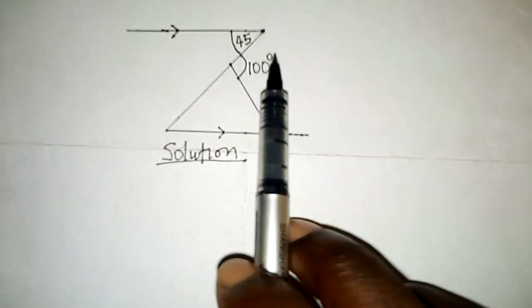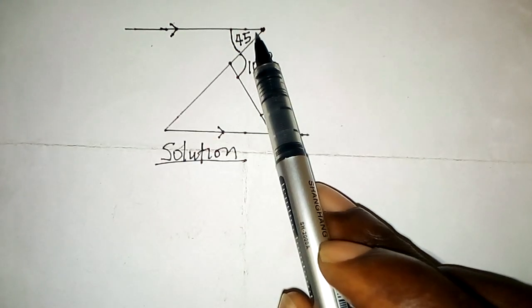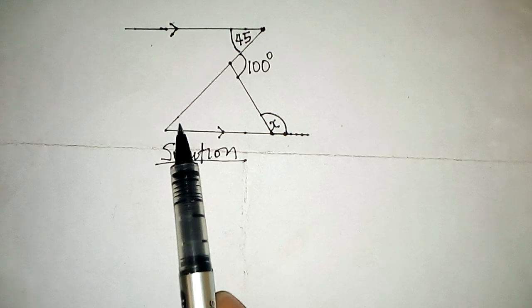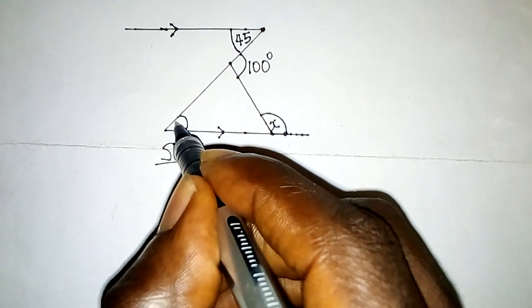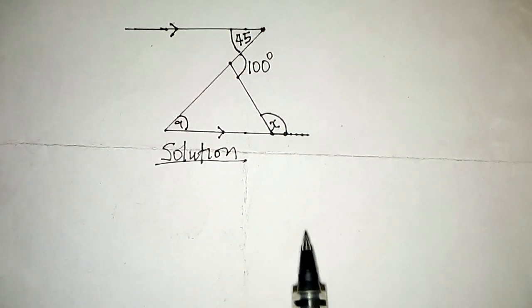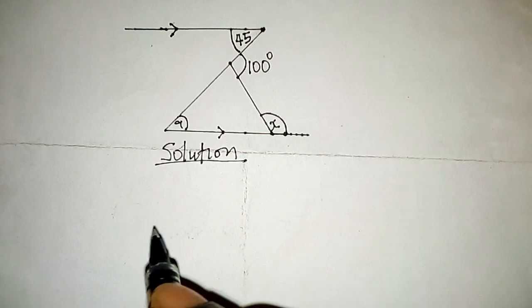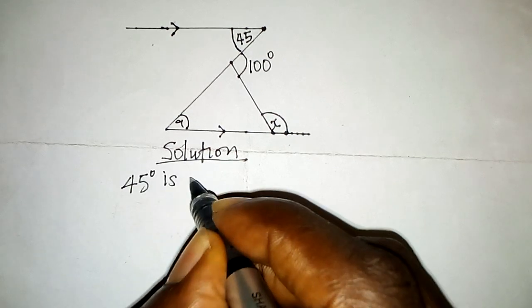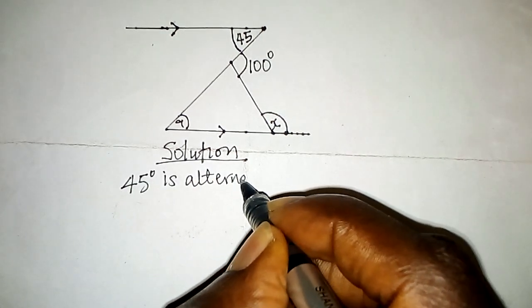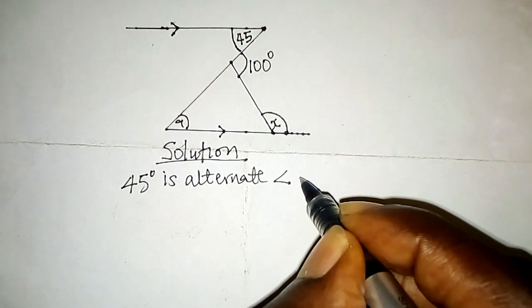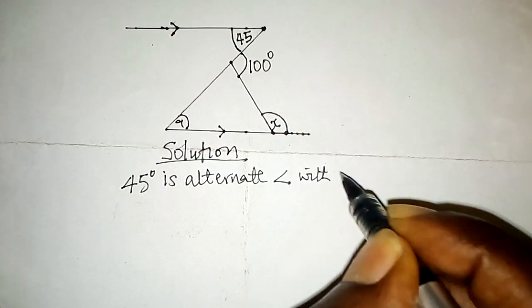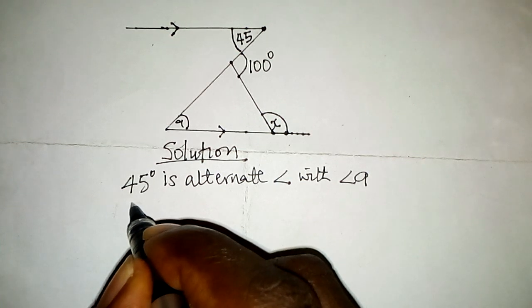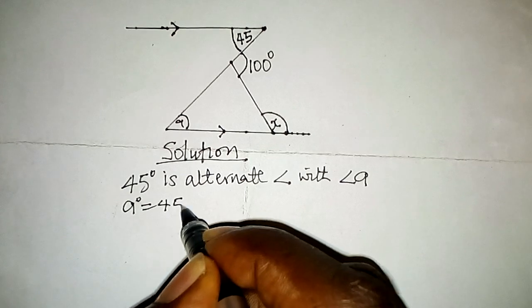Looking at the various angles and analyzing critically, we can see that the 45-degree angle here is an alternate angle to this angle over here. Let us label this angle A. That is to say, 45 degrees is alternate with angle A, meaning that angle A is equal to 45 degrees.